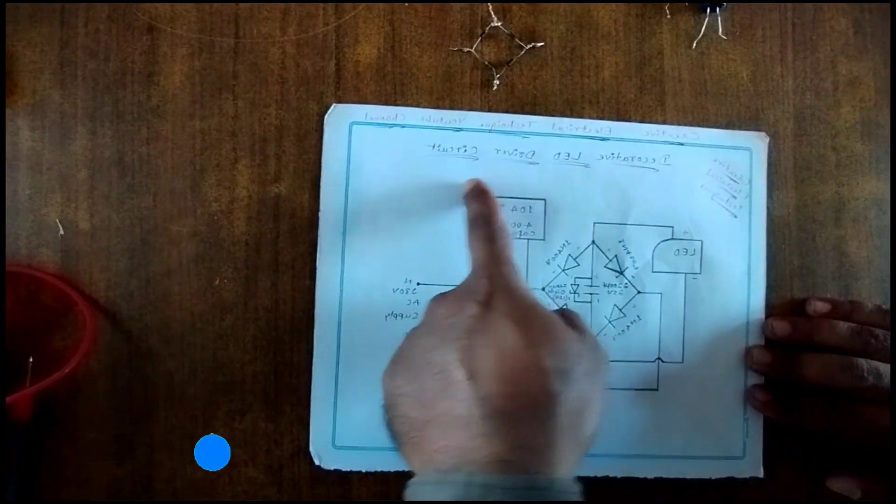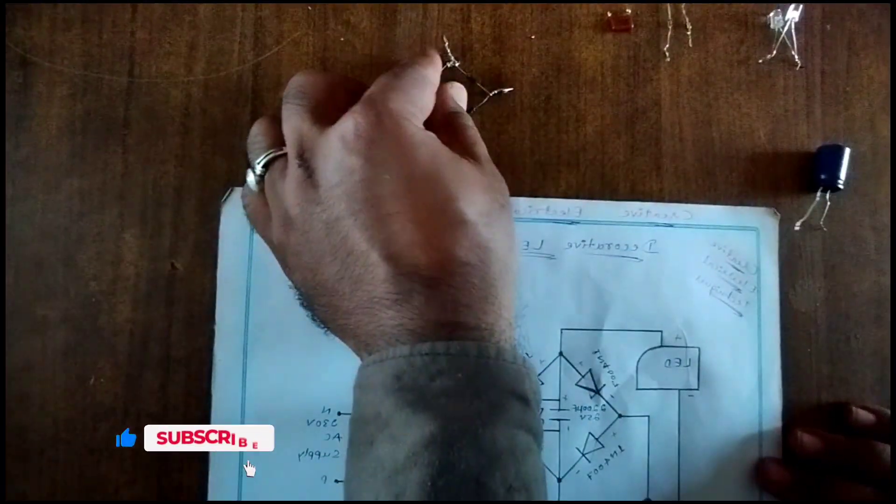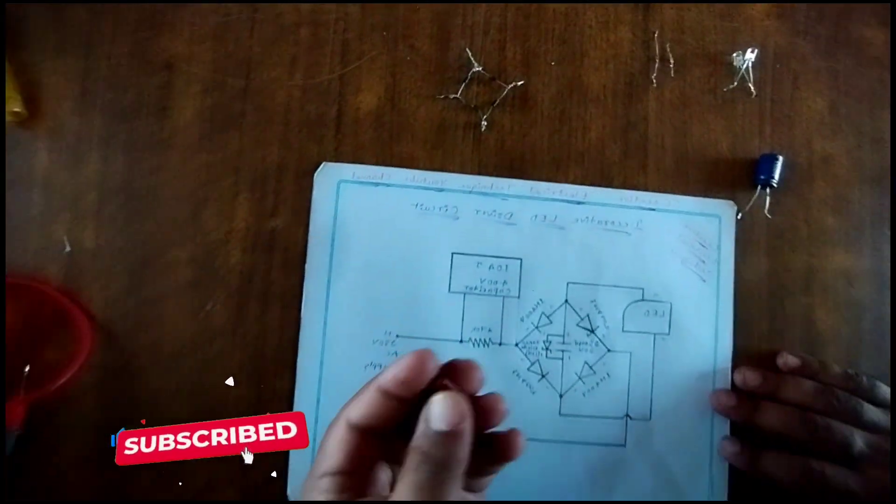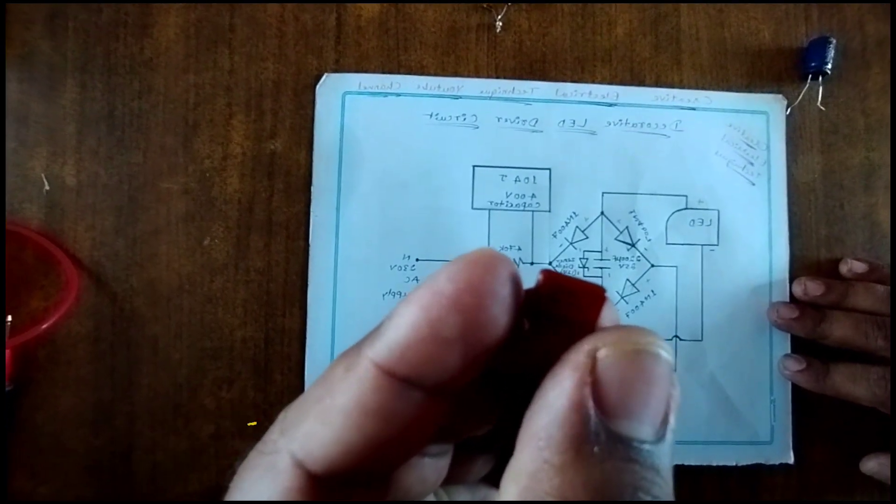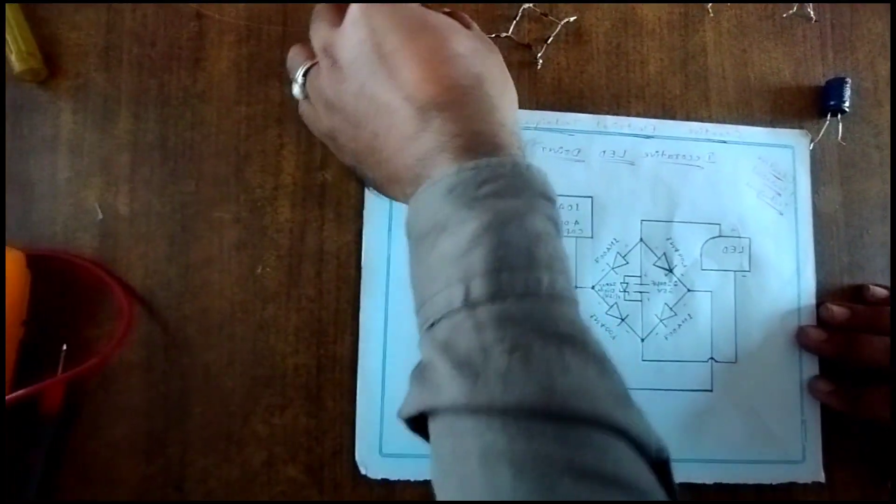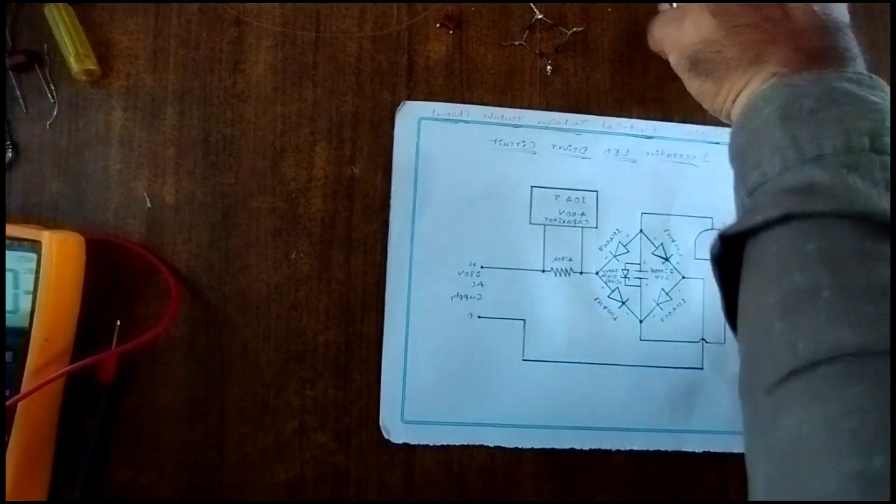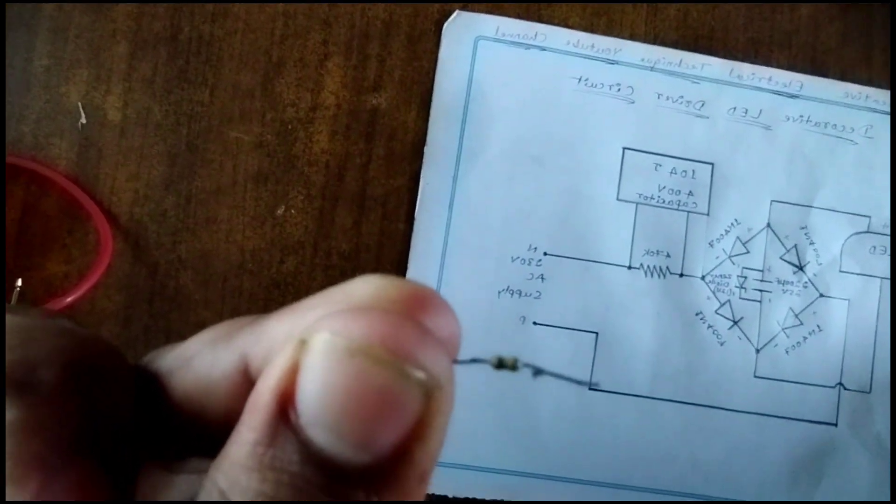Decorative LED driver circuit. In this circuit we want first a 104 400V capacitor. Next we want a 470K resistor. This is the 470K resistor.